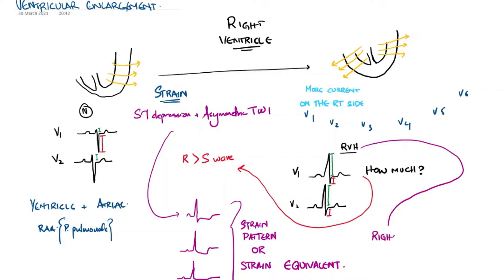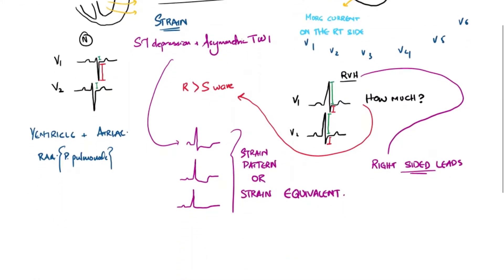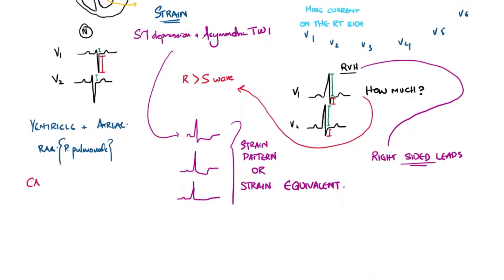Remember that with right ventricular hypertrophy, you are always going to see these changes in the right-sided chest leads. That's a given because the current is coming towards V1 and V2.